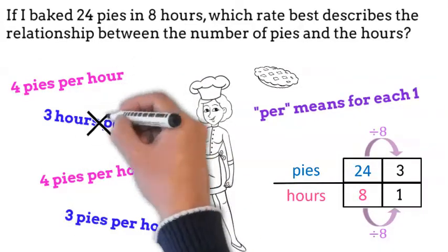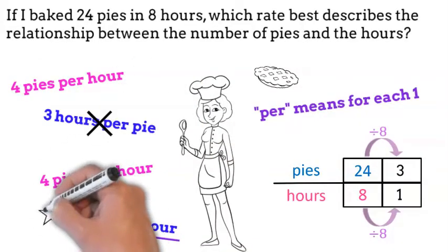Be careful, there are two ratios that are 3 to 1. We want the answer that says 3 pies per hour.